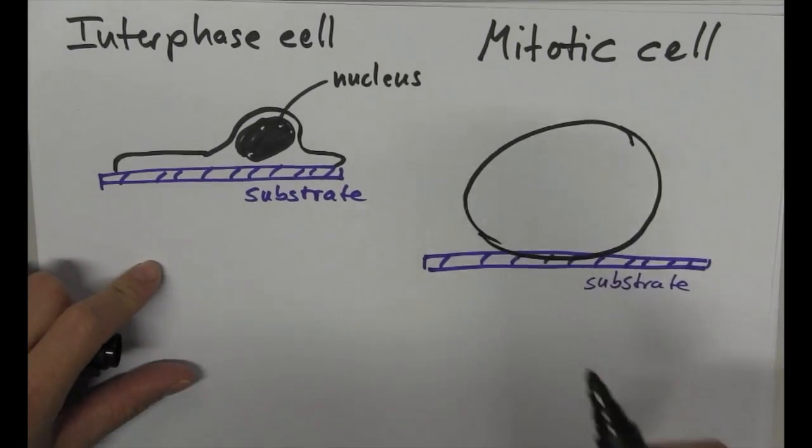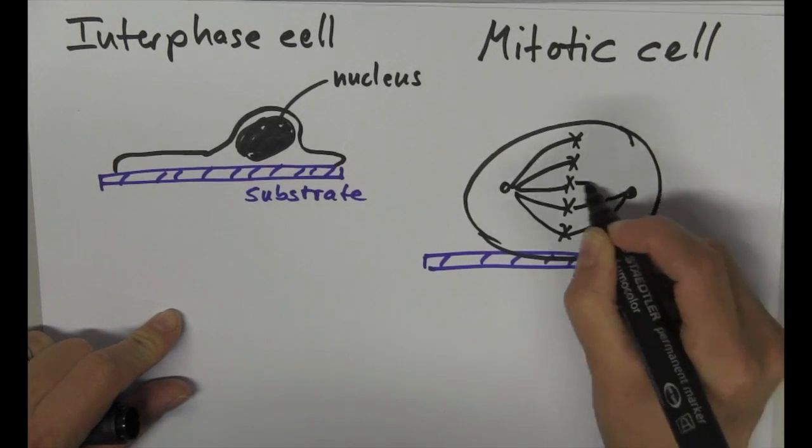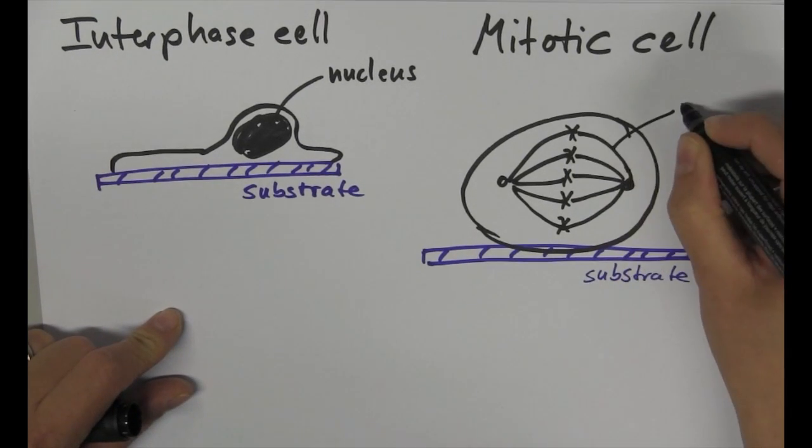Why do cells actually do this? In this way, they provide space and a defined geometry for the assembly of the mitotic spindle and chromosome segregation.